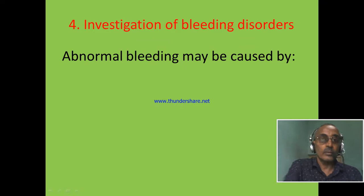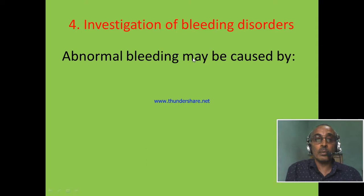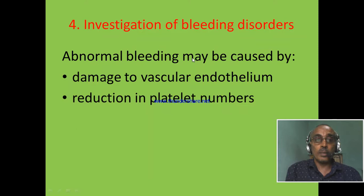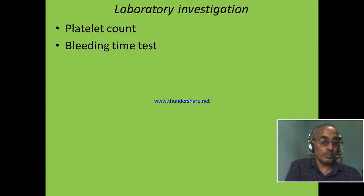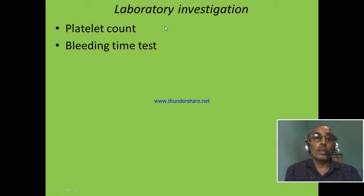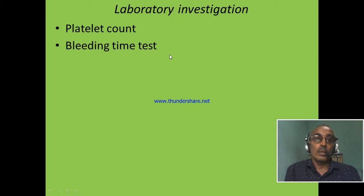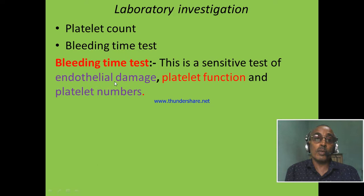The fourth hematologic test is investigation of bleeding disorders. Abnormal bleeding from skin and mucous membrane can be caused by damage to vascular endothelium, reduction in platelet numbers due to bone marrow dysfunction, or defective platelet function, as these conditions can cause abnormal bleeding from skin and mucous membrane. To investigate abnormal skin and mucosal bleeding, we perform a platelet count either by using the manual method or a CBC machine. The second simple method is bleeding time.